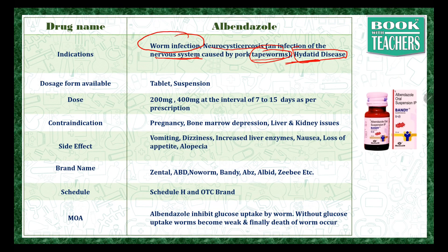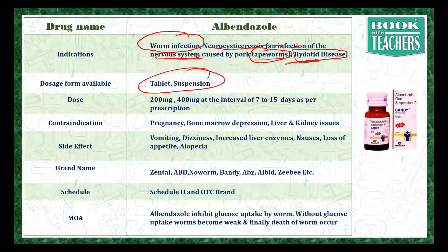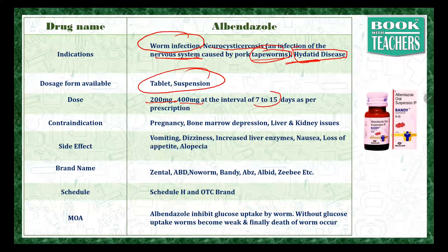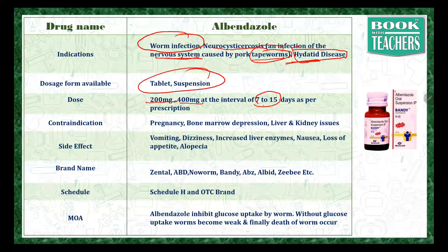Albendazole is available in the form of tablet and suspension. These are usually available in unit dosage form — that is, you have to take one tablet or the full bottle of suspension at a time. The dose varies from 200 mg to 400 mg with an interval of 7 to 15 days as prescribed by the doctors. These drugs are usually given once a week or once every 15 days, depending upon the severity of the disease.